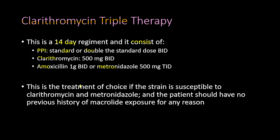The regimen also contains amoxicillin 1 gram twice a day, or metronidazole 500 milligrams three times a day. This is the treatment of choice if the H. pylori strain is susceptible to clarithromycin and metronidazole. The patient should have no previous macrolide exposure, as prior exposure may indicate resistance, making clarithromycin ineffective.